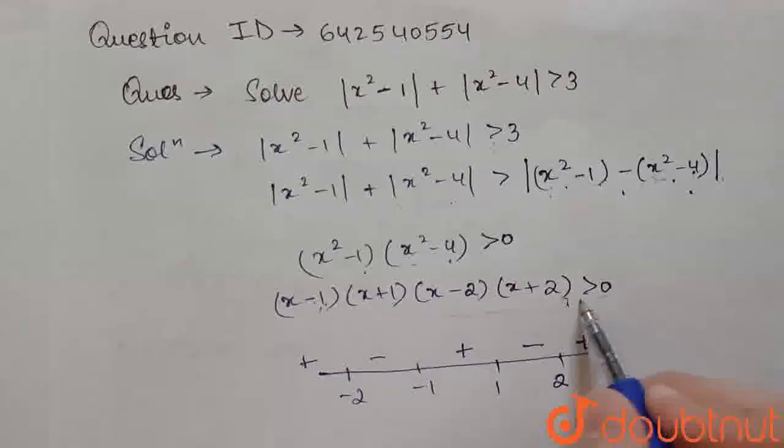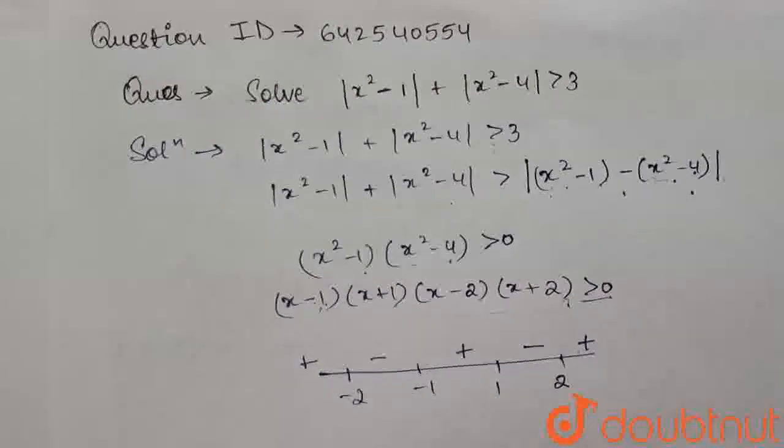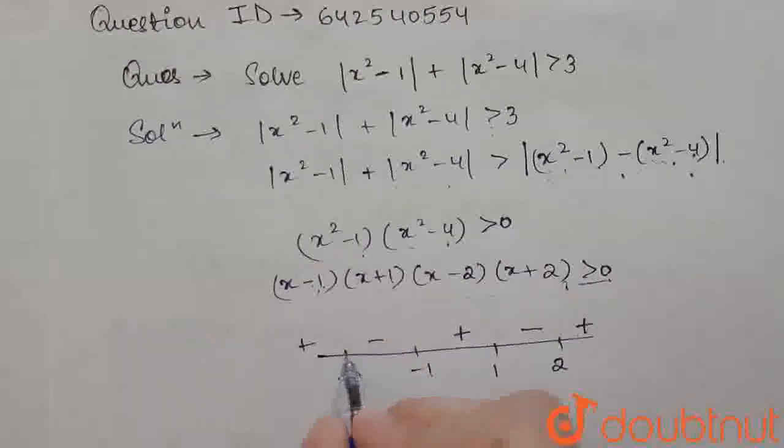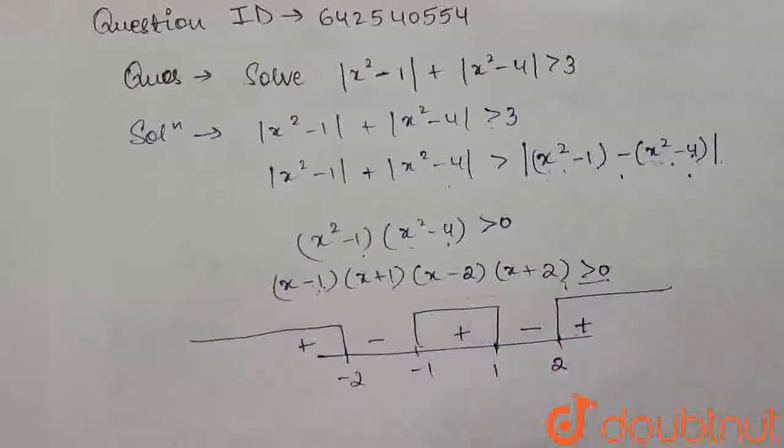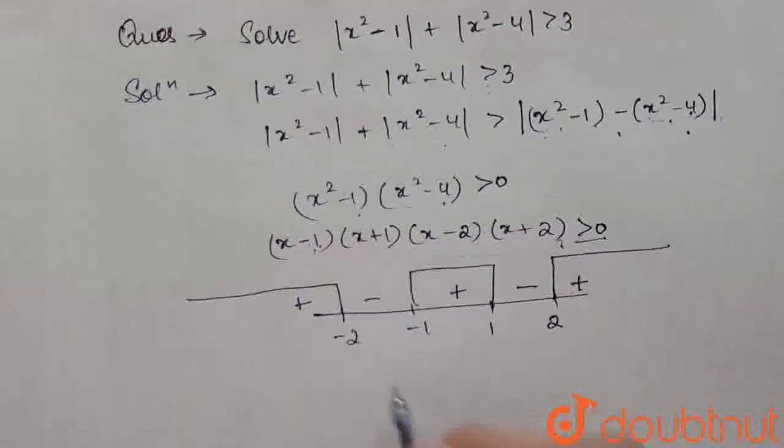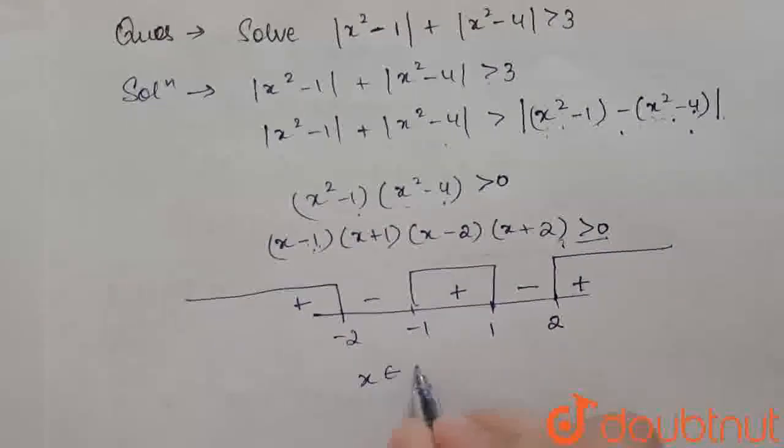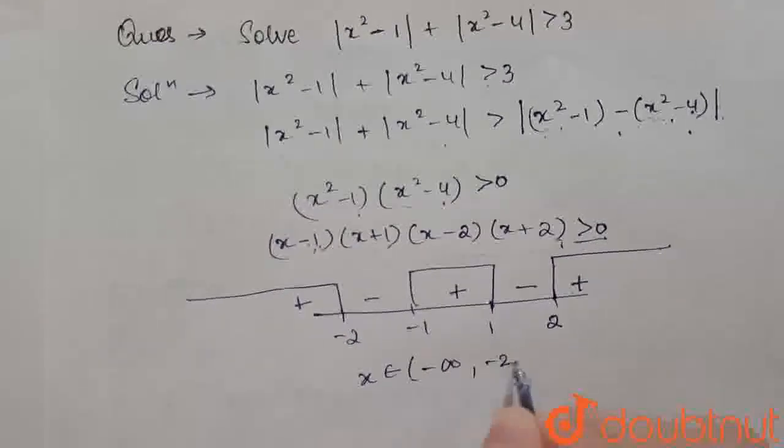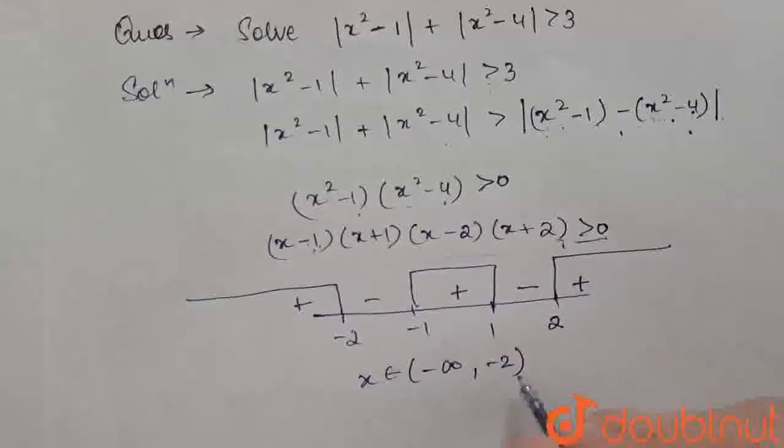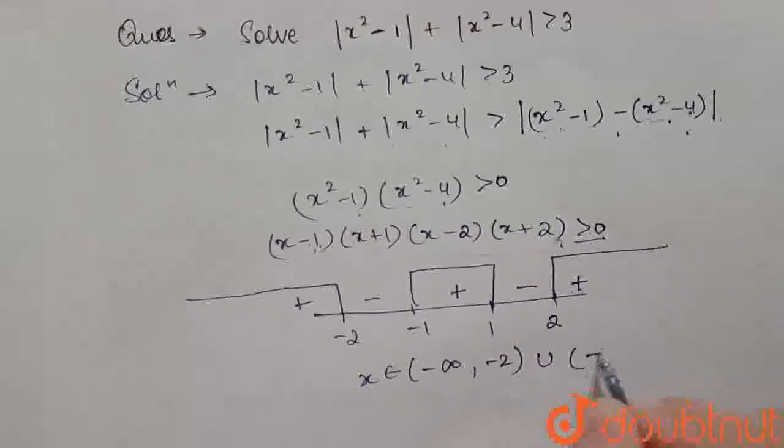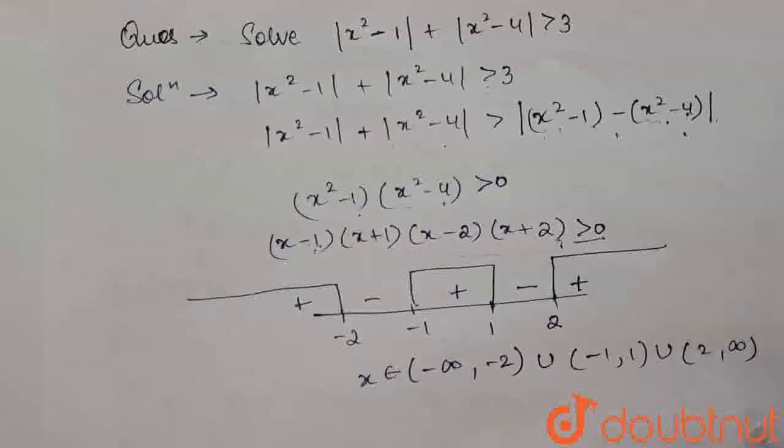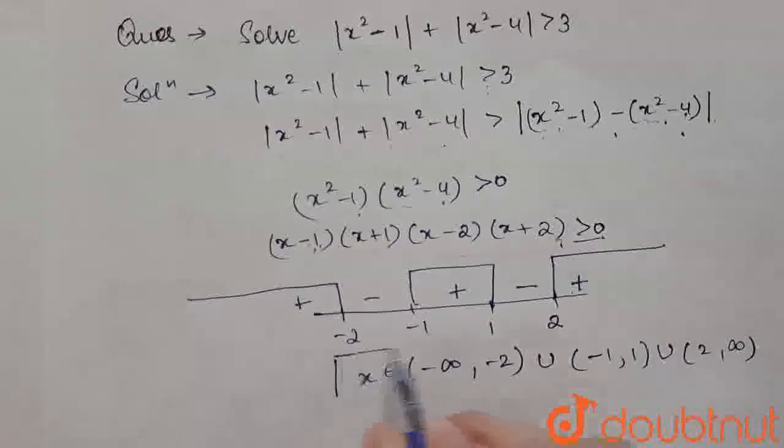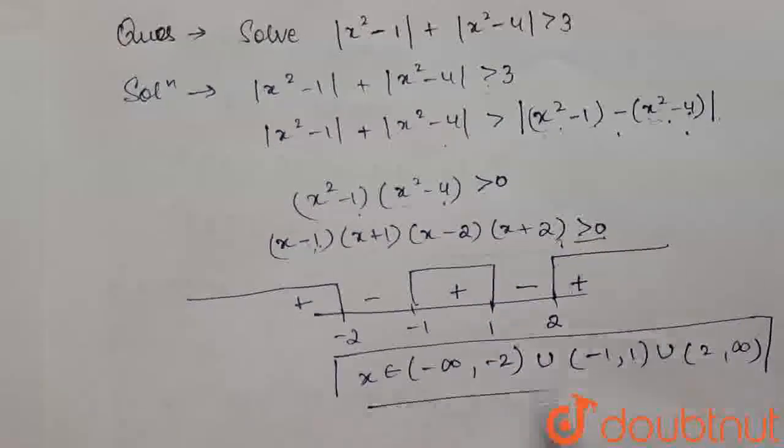Here we have to calculate the positive values. So we are having these intervals. So the value of x will be: x belongs to minus infinity to minus 2 open bracket, union minus 1 to 1, union 2 to infinity. This is the required solution, the value of x.